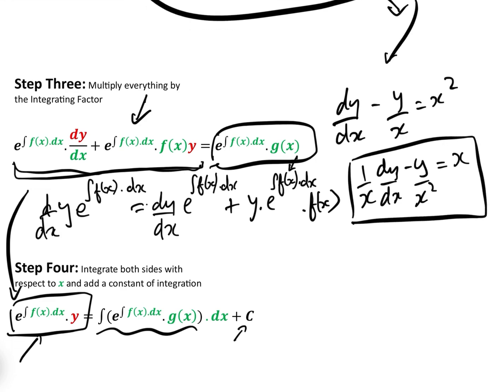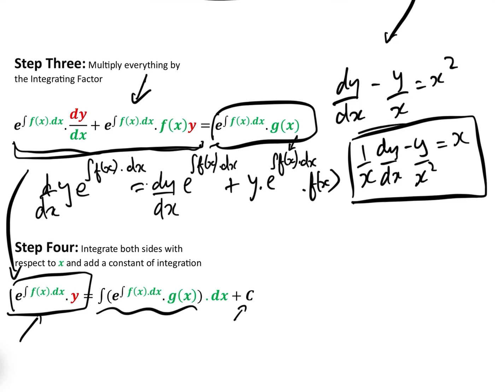Step four, we now need to integrate both sides. Now, we've already discussed that this side, because of the integrating factor, integrates to y times by the integrating factor, which was 1 over x. So, we know that that is y over x, that bit.